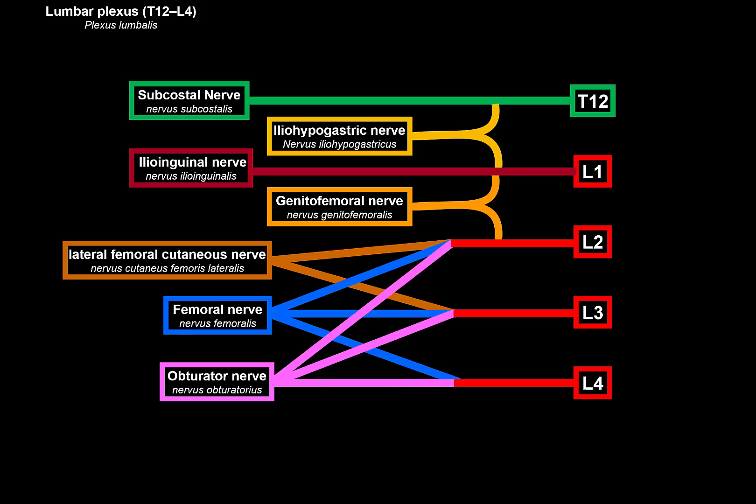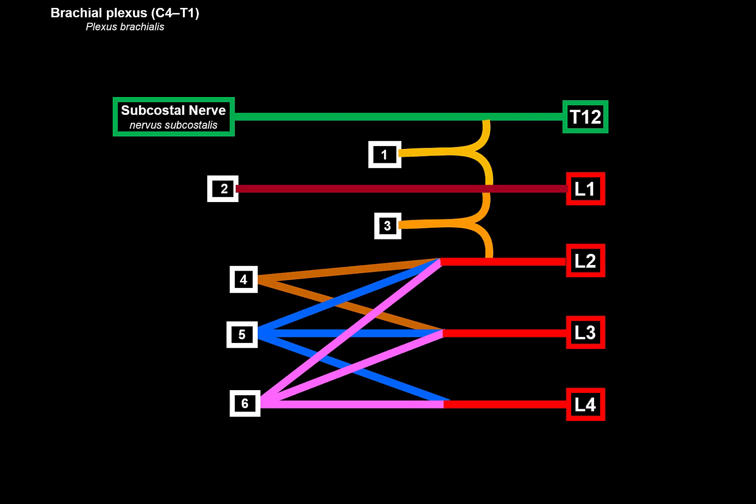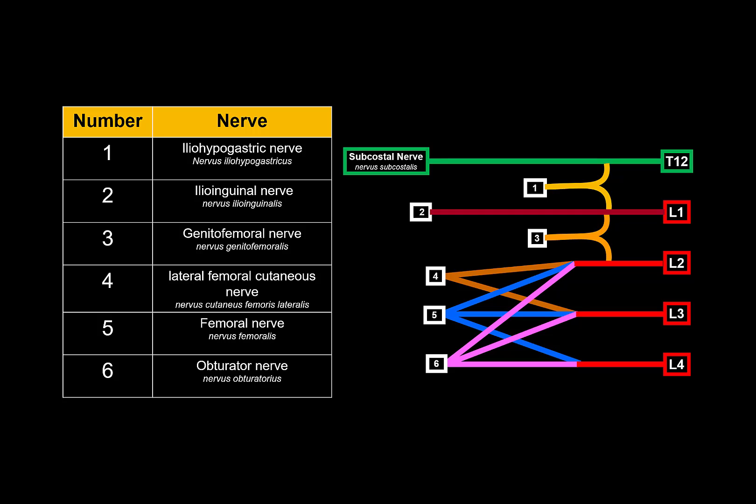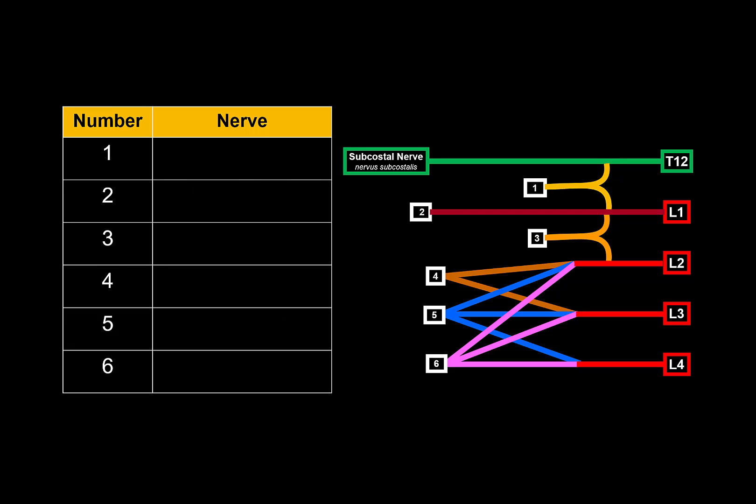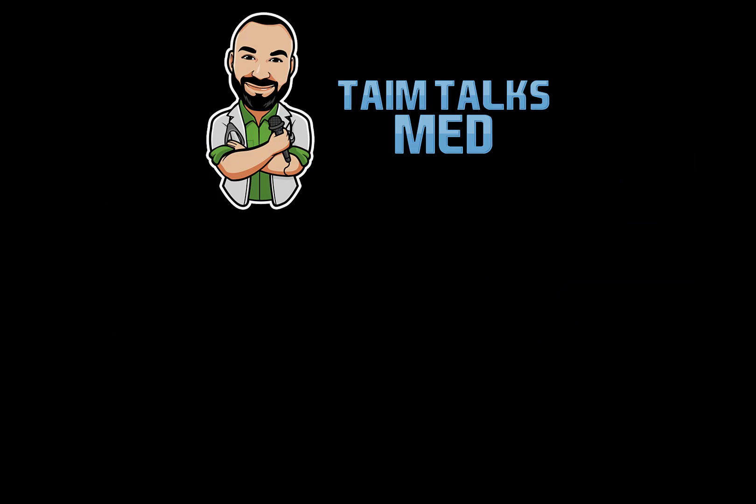Now for a quick quiz: the labels on the scheme will be replaced with numbers, and the names will disappear from the table. Can you name each numbered nerve and describe what it supplies? If you can do that, you've got a good grasp of this topic. Thank you for watching — if you enjoyed it, please like, comment your favorite moment, subscribe, and turn on notifications. Check the link in the description for other ways to support.